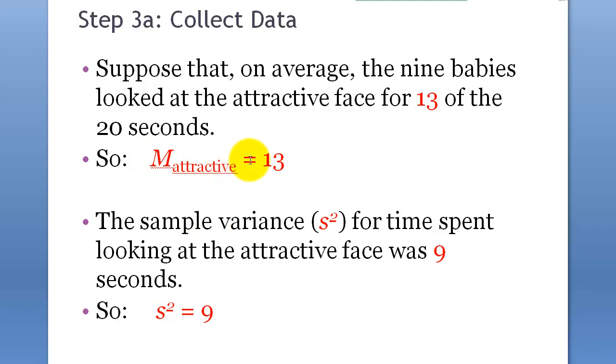Mean for the sample population was 13, attractiveness, there are two populations. Anyway. Babies, the average or mean of the seconds that the babies look at the attractive phase was 13. And, sample variance was 9 when you do the calculation.